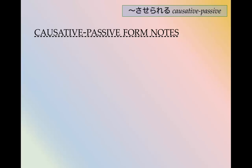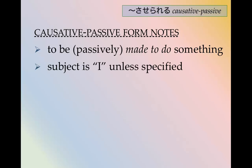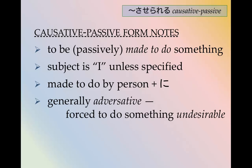A few notes about the causative passive form. It means 'to be made to do something.' It's the causative — to make someone do something or let someone do something — and passive — to be made. So it's a passive form with the causative. The subject is usually I unless specified otherwise. The person who does the forcing is marked by に. And it's generally adversative, meaning you're forced to do something undesirable. No one says 'Oh, I was forced to eat ice cream' — unless maybe you were lactose intolerant. So it's usually something that you don't want to do.